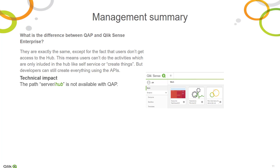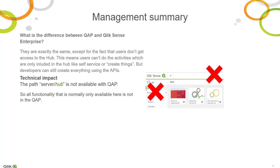So what is the difference? In principle they are the same, except QAP users do not have access to the hub. This means users cannot engage in self-service activities. Self-service is included in the hub, a functionality of Qlik Sense Enterprise.